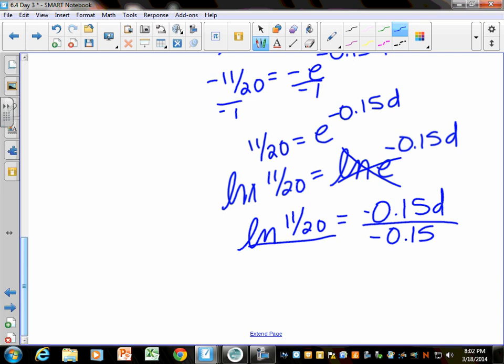And I'm left with ln of 11 over 20 equals negative 0.15d. To solve that for d, I'm going to divide by negative 0.15. Be careful entering this in your calculator. On my calculators, when you hit ln, it automatically opens a parenthesis. So, you need to put 11 over 20 and close that parenthesis. And then you need to divide by negative 0.15. And when I did that, I got like 3.99 days. So, in how many days before 450 students? I would say in about 4 days. Until 450 students have heard that rumor. What do you think about that? I don't know if I believe that you can use math to show how fast the rumor spreads. But, they say you can.